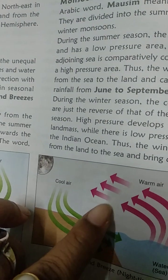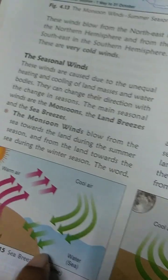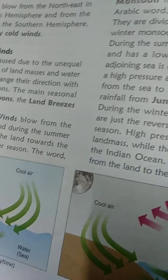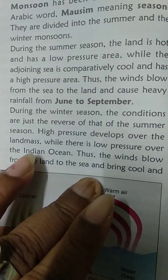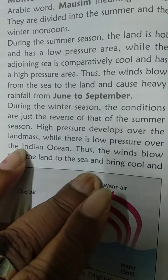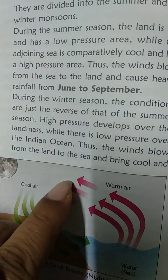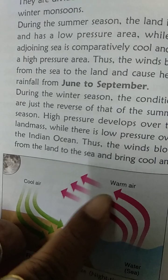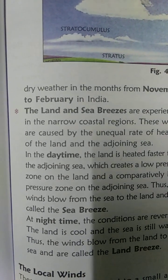During the winter season, the conditions are just the reverse of summer. High pressure develops over the landmass while low pressure is over the Indian Ocean. Thus the wind blows from the land towards the sea and brings cold and dry weather during the months of November to February in India.